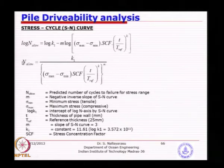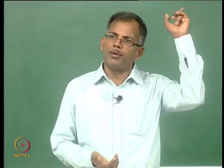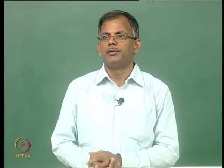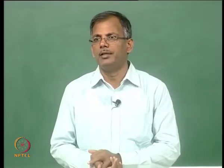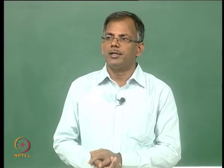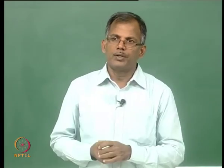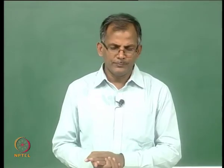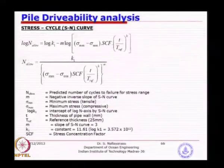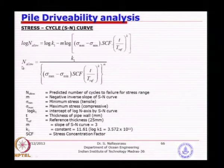Once you have the N allowable values — the number of cycles to failure — you know the number of blows actually applied on top of the pile that cause this level of stress. The ratio will give a sense of whether the crack will actually fail or if damage is going to occur. The allowable number of cycles is analogous to allowable stresses, and the applied number of cycles divided into allowable cycles gives the fatigue damage.